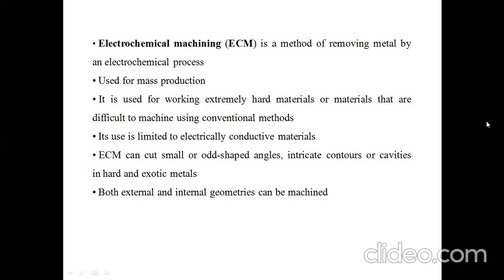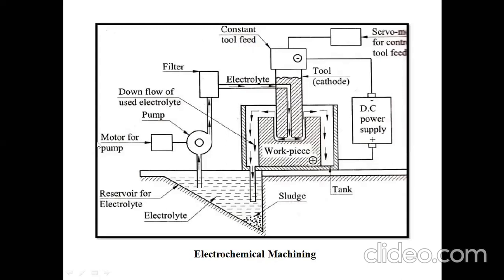Now we will discuss the elements of your electrochemical machining process. There are many elements involved. The first element is the DC power supply. The second element is the tool, which is denoted by a negative sign because it is connected to the negative terminal of the DC power supply. The third element is the workpiece, which is denoted by a positive sign and is connected to the positive terminal.